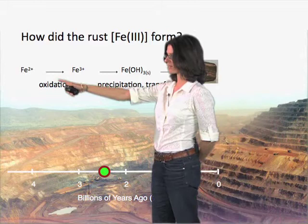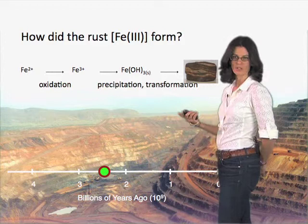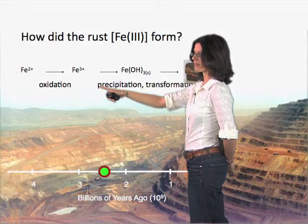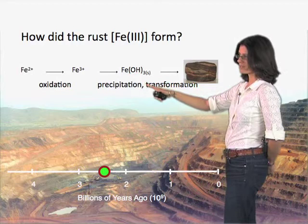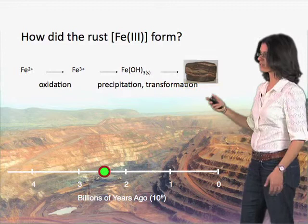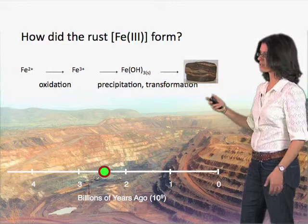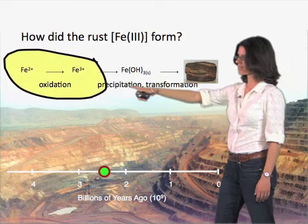It began a long time ago in ancient seas in the form of ferrous iron — that's iron II. Then some process oxidized this ferrous iron to ferric iron, and at that point it could react with constituents in the water, such as hydroxyl species, to form iron minerals such as ferric oxyhydroxide — rust. Over time, this mineral transformed and changed into different types of minerals, became compacted and mingled with others, and wound up in these rocks we today know as banded iron formations.